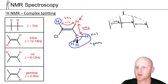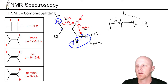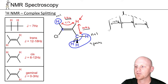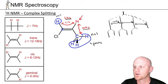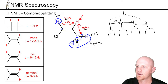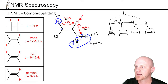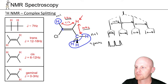Then we take this further and look at the other neighbor with a splitting of 6 hertz — just one neighbor, so N+1 gives two peaks. We're going to split each of those four peaks into two, with the total distance being 6 hertz — so 3 hertz to the left and 3 hertz to the right for each peak, giving two new signals from each original peak. This distance is 6 hertz throughout, and we end up seeing eight peaks total in the spectrum.